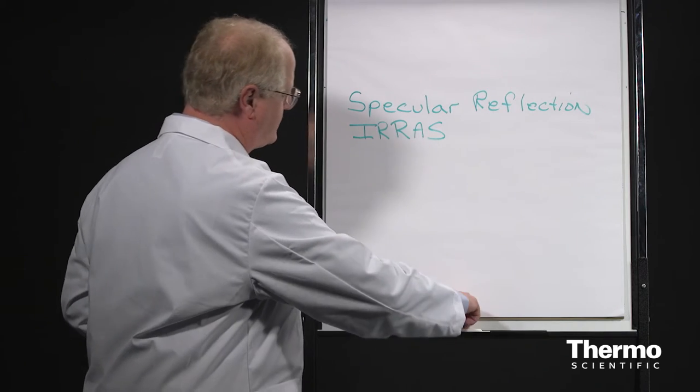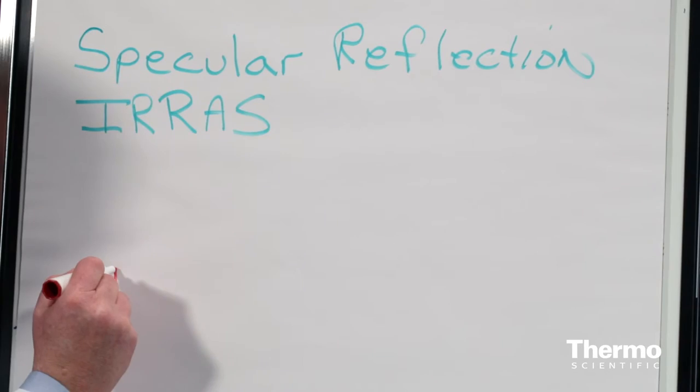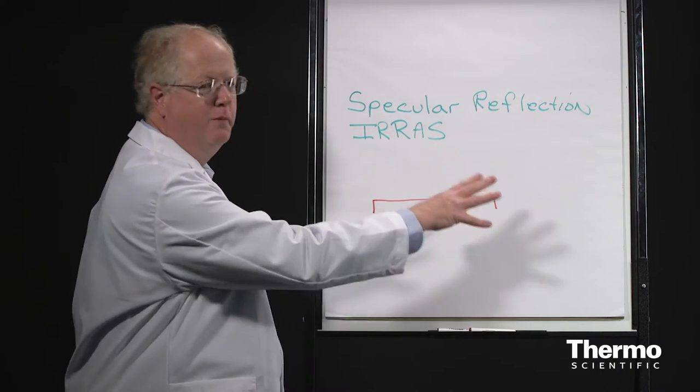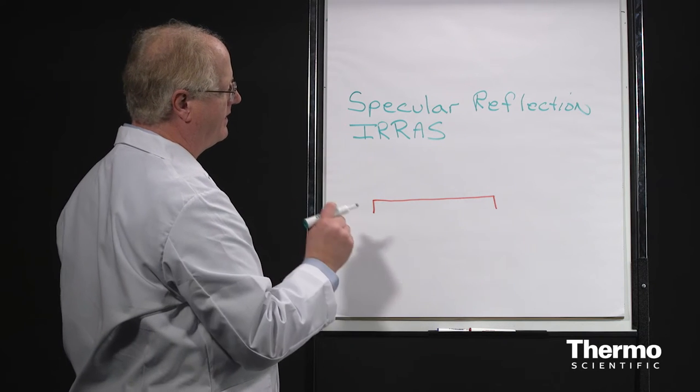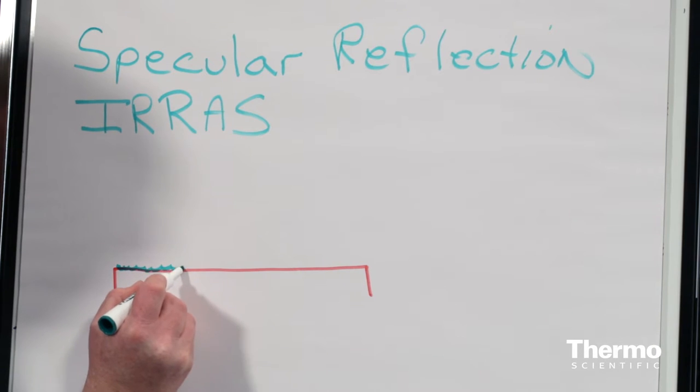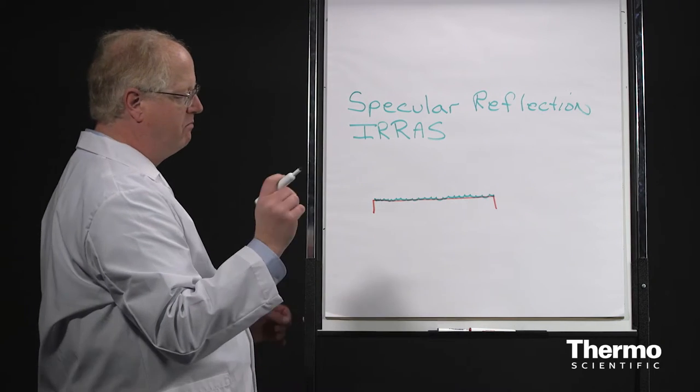The way this works is very straightforward. You have a surface which is reflective, like gold or aluminum or some material like that. And on that surface, you have a very thin film. That film can be down to microns thick.